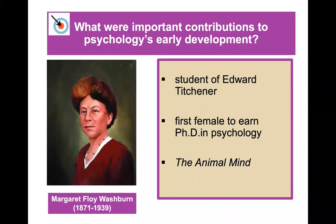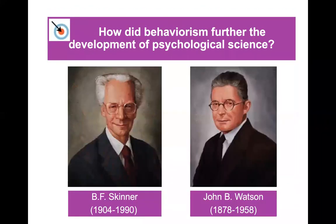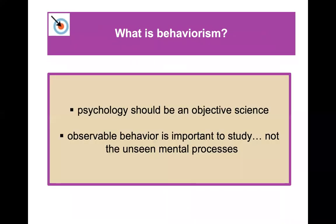Two of the most famous behavioral psychologists you may have heard of are B.F. Skinner and John Watson. B.F. Skinner is known for his work with pigeons and animals and things like the Skinner box. John Watson did research at Johns Hopkins University, and one of his most famous studies is the Little Albert study, which we'll learn a lot about in our unit on behaviorism. Behaviorists felt that psychology should be an objective science — observable behavior is important to study, not the unseen mental processes.